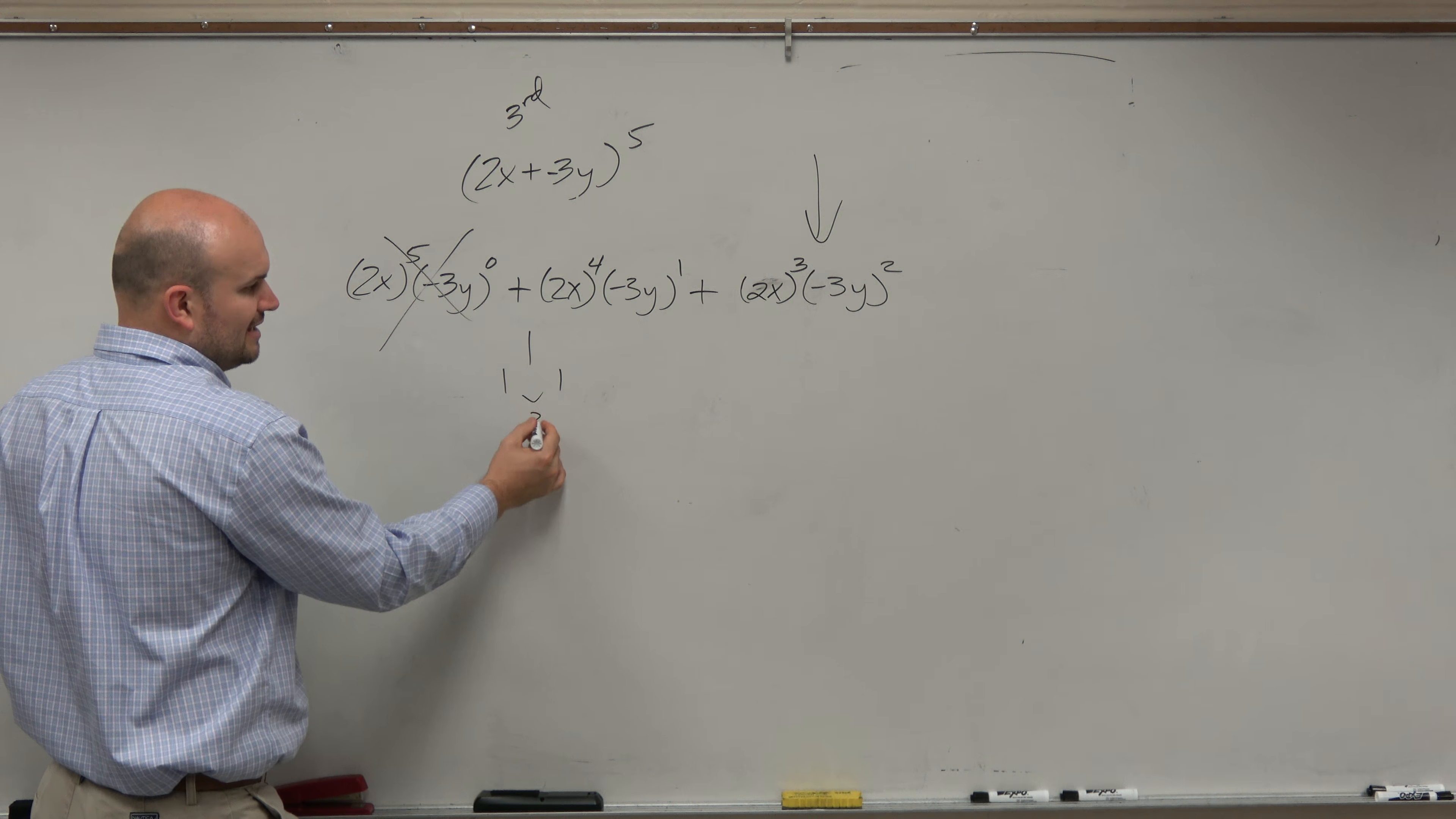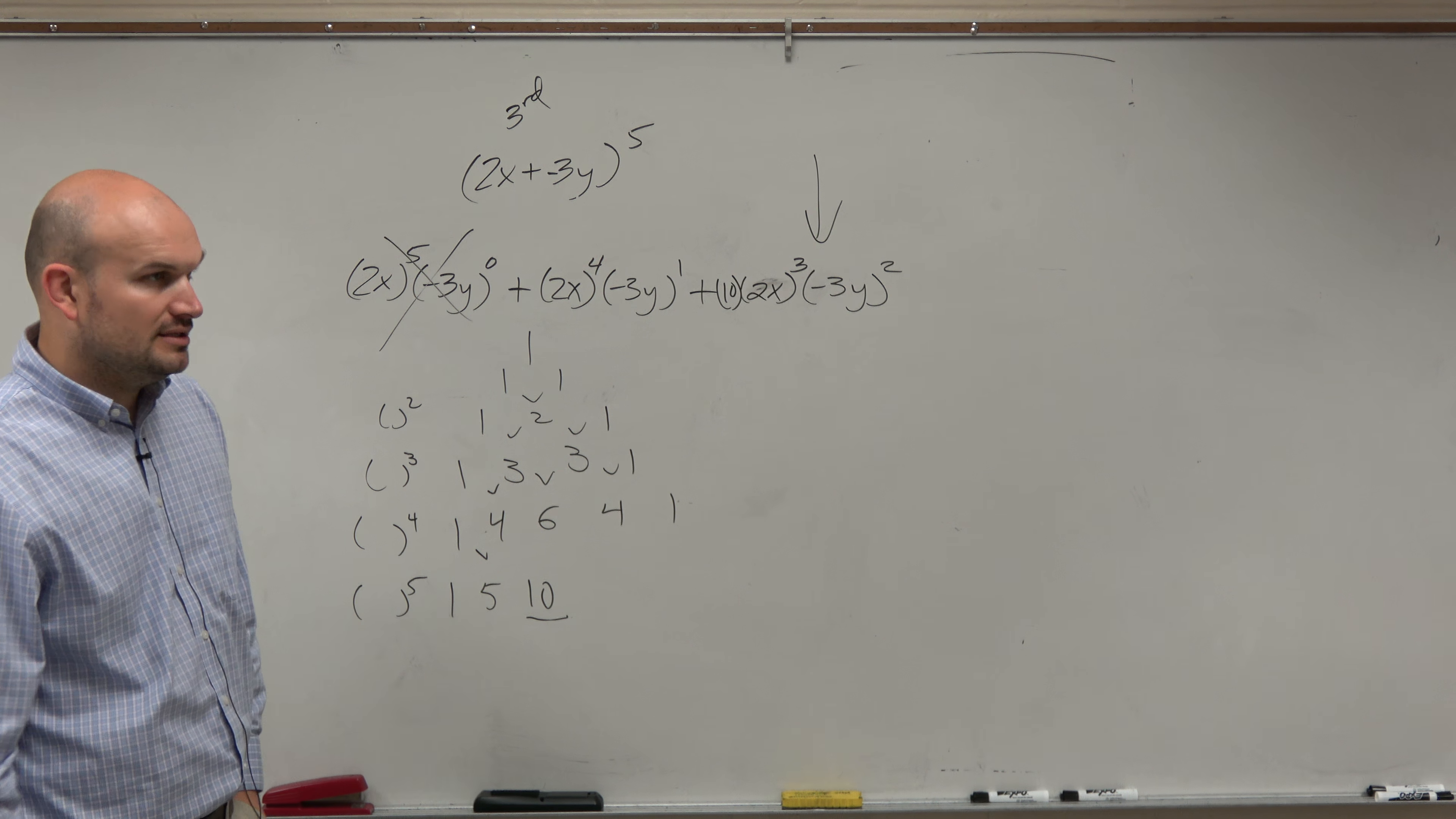So that's going to be 3, 3, 1. Remember, this is a binomial squared. This is a binomial cubed. This would be the expansion of a binomial to the fourth. That's going to be 1, 4, 6, 4, 1. And then the binomial expanded to the 5th is going to be 1, 5. That's where I'm getting these numbers. 1 plus 4 is 5. And then 10. And I can stop right here because that would be the third term.